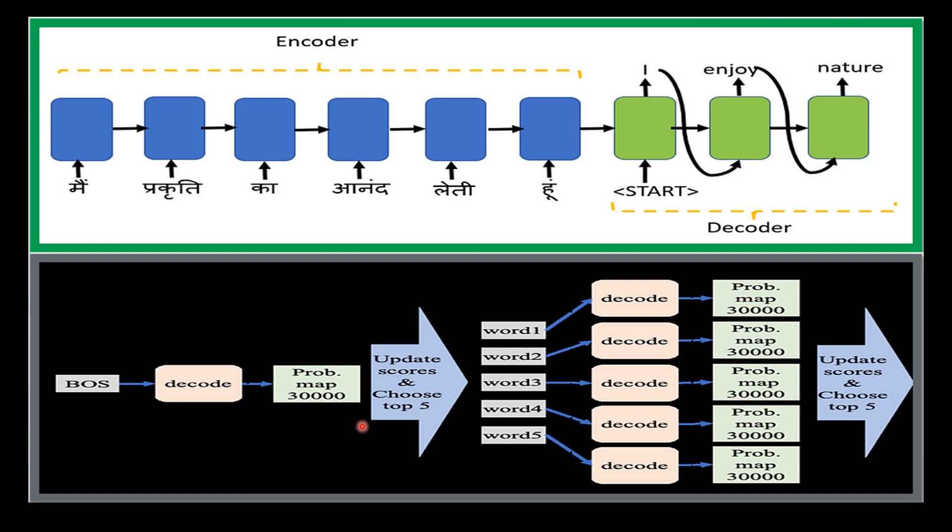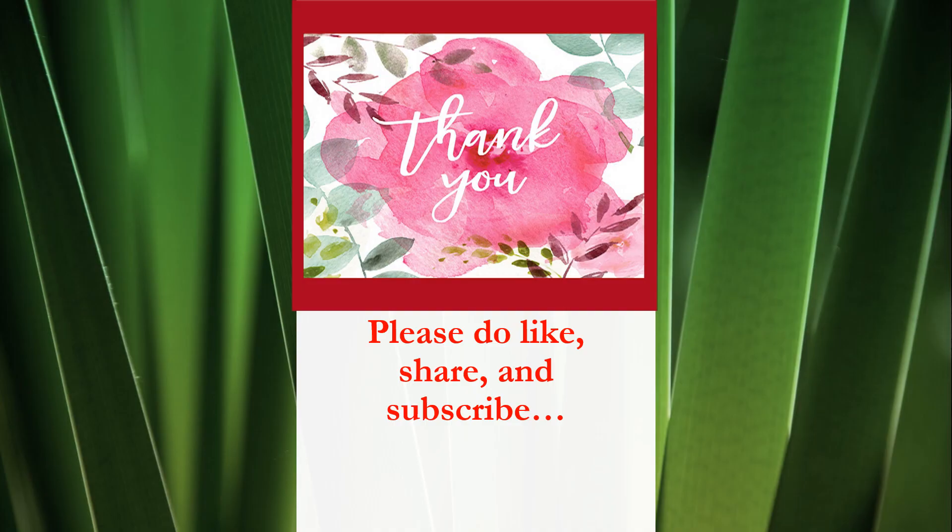To summarize, beam search is a search algorithm used in natural language processing to find the most likely sequence of words or phrases in a given context. It maintains a set of the top k most likely sequences at each step — called the beam — and expands each sequence by adding the most likely next word. Beam search considers the possible effect of future words and can produce better results than greedy search, but it requires more computational resources.